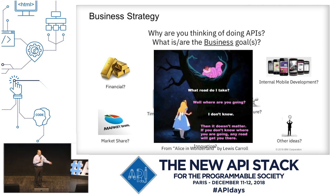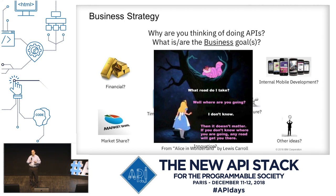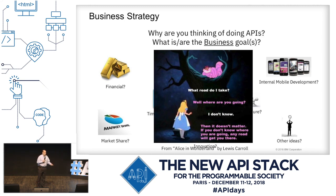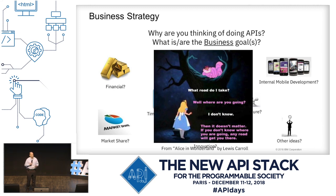Some businesses are interested in making money — financial goals. They want to introduce a partnering scenario, an ecosystem. Mobile — they want to enable their mobile developers to do more. Time to market is a very important one for APIs. Competitors are doing something and they need to catch up. They want to increase market share, or innovate. These are just some examples — you may have more for things you're thinking about in your business.